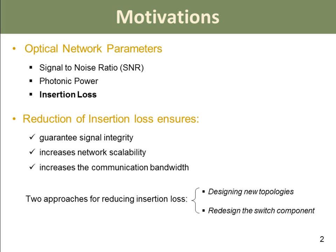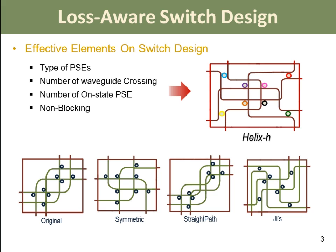There are two approaches proposed for reducing insertion loss. The first one is designing new topologies, and the second one is redesigning the switch component to decrease the number of waveguide crossings, which is used in our paper. Photonic switches are one of the most important components of photonic networks, which affect the performance of the whole system. Effective elements on switch design are type of PSEs (cross or parallel), 1x2 PSE or 2x2 PSE, number of waveguide crossings, number of unstate PSEs — both important on a straight path when dimension order routing algorithm is used — and the non-blocking feature.